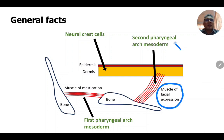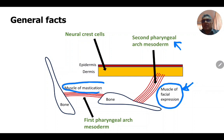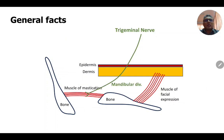Muscles of facial expression develop from the mesoderm of the second pharyngeal arch. The second pharyngeal arch nerve is the facial nerve, so muscles of facial expression are supplied by the facial nerve. Muscles of mastication develop from the mesoderm of the first pharyngeal arch, and the first pharyngeal arch nerve is the mandibular division of the trigeminal nerve, so muscles of mastication are supplied by the mandibular division of the trigeminal nerve.